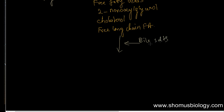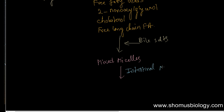Bile salts act on all of these digestive products and produce components known as mixed micelles. These mixed micelles facilitate absorption of dietary lipid by the intestinal mucosal cells, which start the absorption of these mixed micelles.